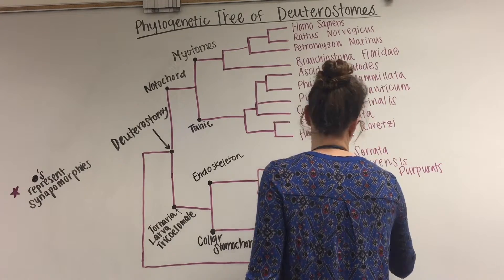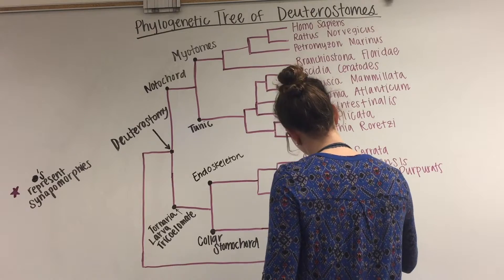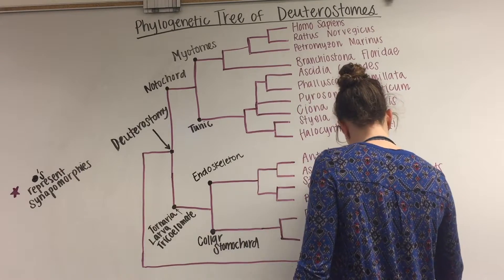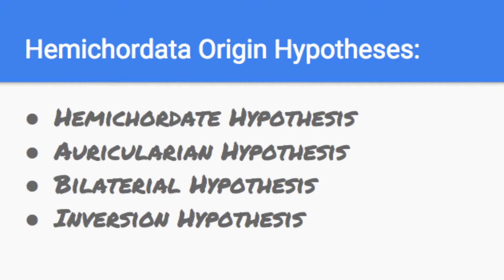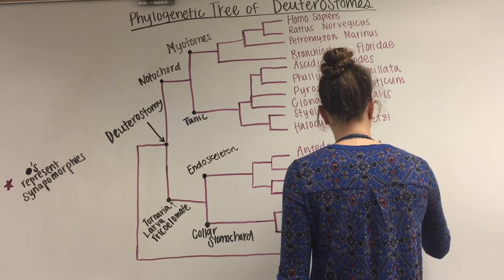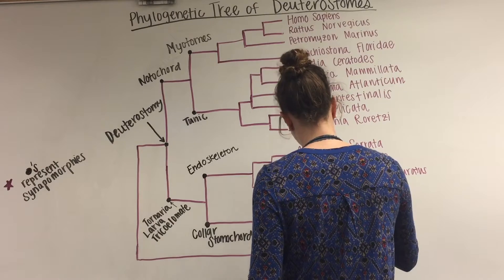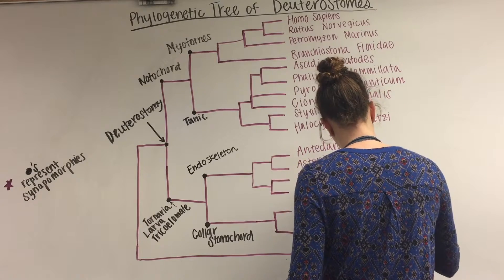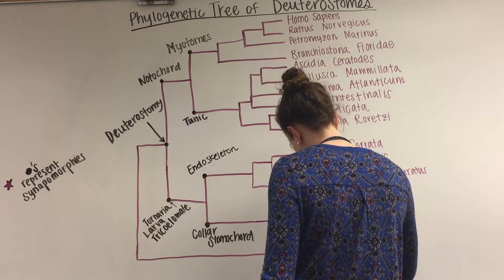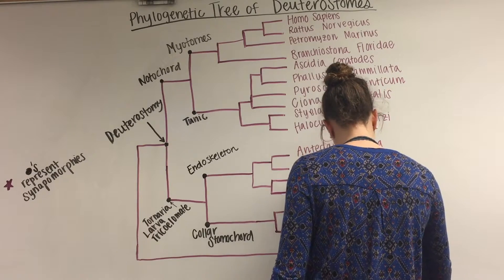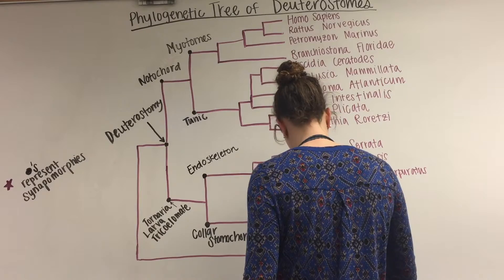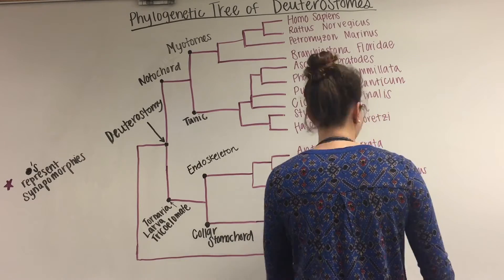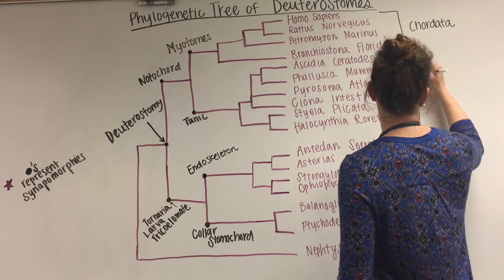Fossil records predict that these deuterostomes are around 500 million years old. Four hypotheses exist concerning their origin. The hemichordate hypothesis, developed by Bateson, suggests hemichordates evolved through an exaggeration of structures in a common ancestor that already contained a dorsal central nervous system. The auricularian hypothesis states the ancestor was a ciliated larva resembling a pterobranch, where cilia eventually internalized to form a new central nerve cord. The bilateral ancestor hypothesis states that chordates originated from a complex bilateral protostome animal. Finally, the inversion hypothesis suggests that an early protostome ancestor inverted its body and evolved a mouth, making chordate anatomy the inverse of protostomes.